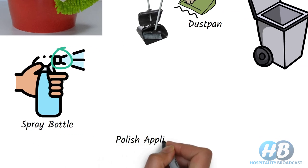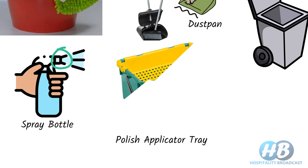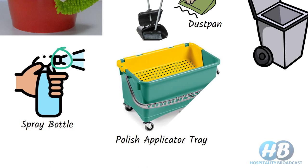The polish applicator tray is used in conjunction with a polish applicator mop, which is used for polishing floors with liquid polish. One must label the polish applicator tray with the kind of polish it is to be used with.